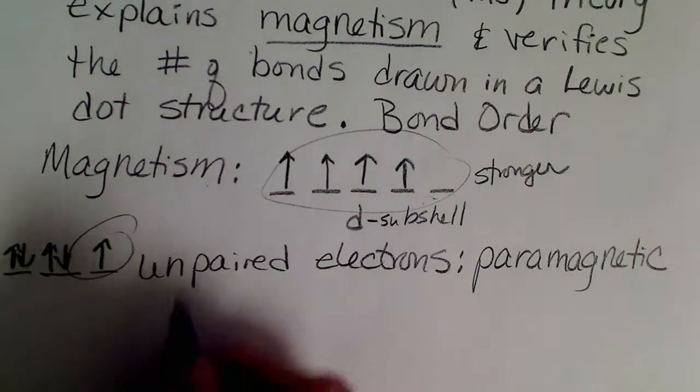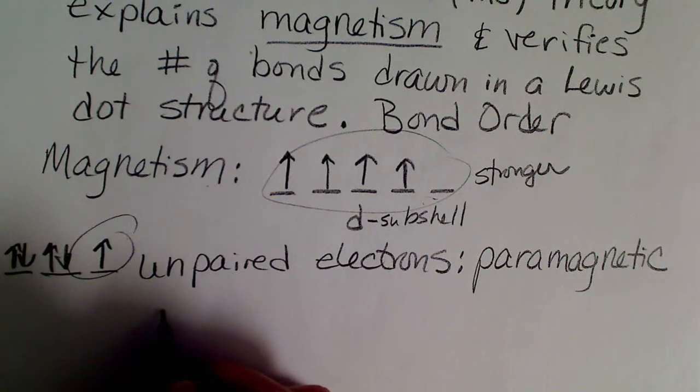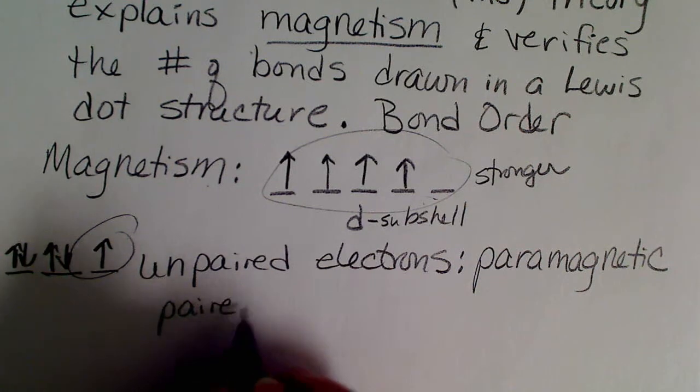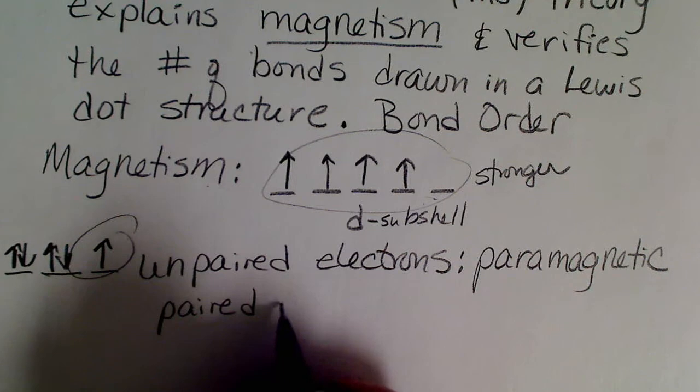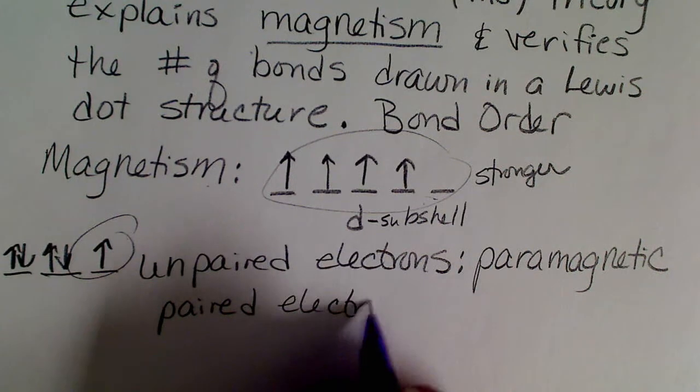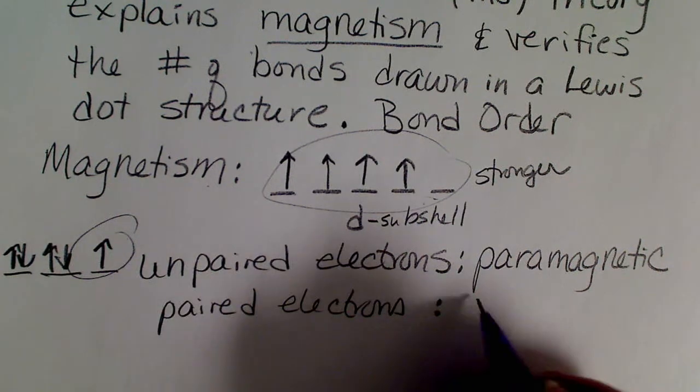If the electrons are all paired up, then that magnetic property is canceled. So paired electrons is diamagnetic.